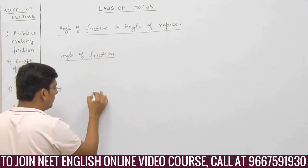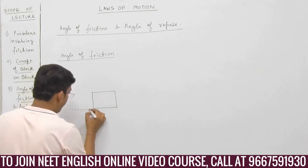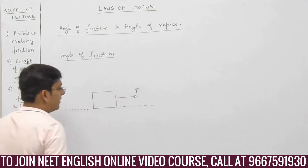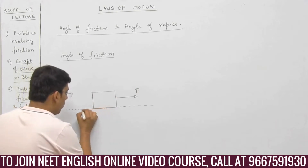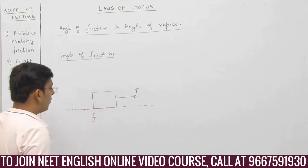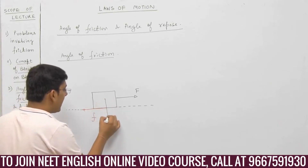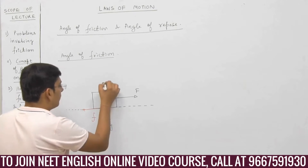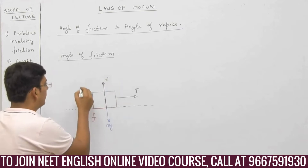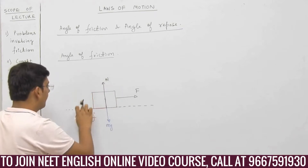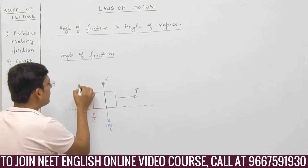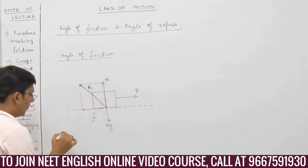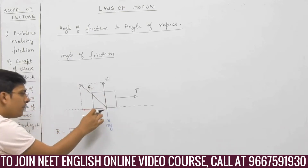There is a block. We are applying some force on the block — we are trying to move the block. This is some external force. Friction is trying to oppose the relative motion. Mg is acting downwards, normal reaction is upwards. Normal reaction and friction both are contact forces. Let us draw the resultant of normal reaction and friction, which is under root of N squared plus F squared.